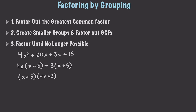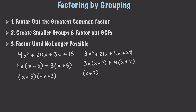Let's do another example: 3x² + 21x + 4x + 28. We can group and factor: 3x times (x + 7) plus 4 times (x + 7). Taking out the common factor (x + 7) gives us a final result of (x + 7)(3x + 4).